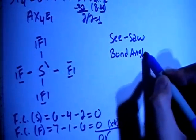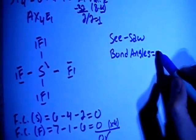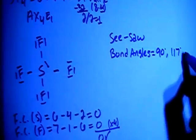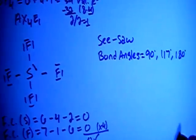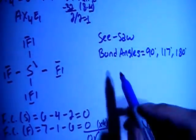With the seesaw shape, the bond angles are—there's a couple of them—approximately equal to 90 degrees on some parts, 117 degrees, and also 180 degrees. So those are your 3 different bond angles for this seesaw shape.